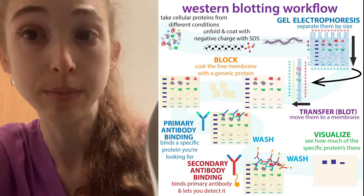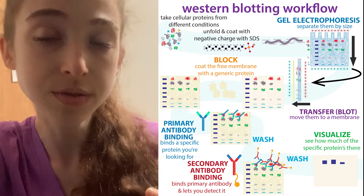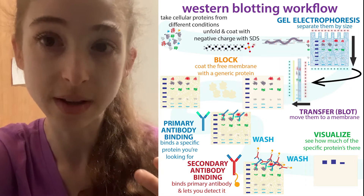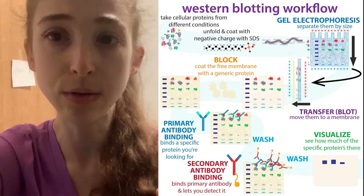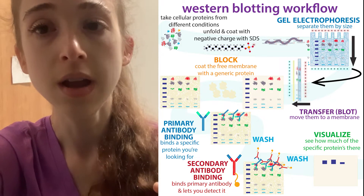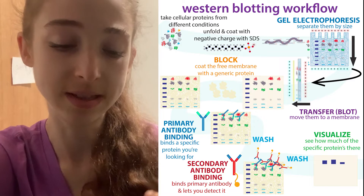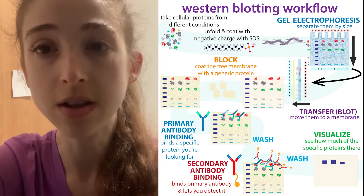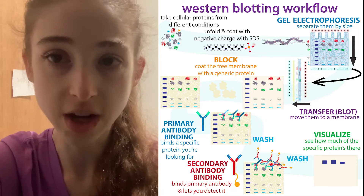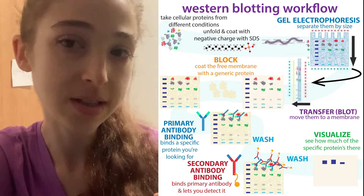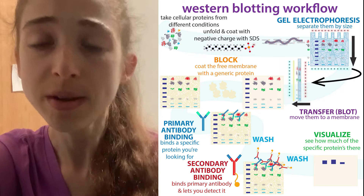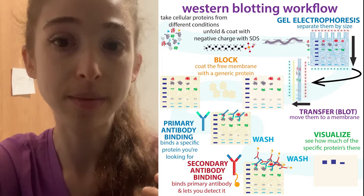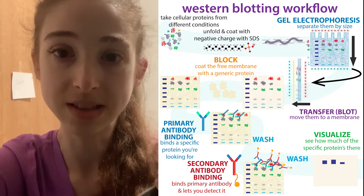Similarly, we can use a western blot to detect how much of a very specific protein there is. We take all the proteins, separate them by size using SDS-PAGE — we unfold the proteins and send them traveling through a gel. The bigger proteins get tangled up more in the mesh, so they don't travel as far when we turn off the electric field. Then we use antibodies — little proteins that recognize specific things — that are specific for the protein we want to see, and therefore we can see how many copies of it there are.